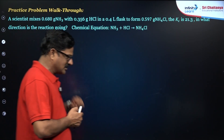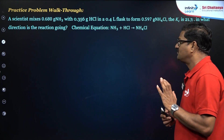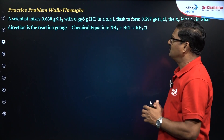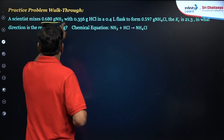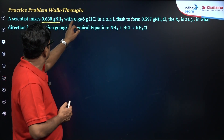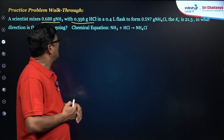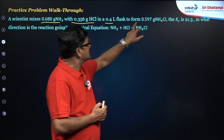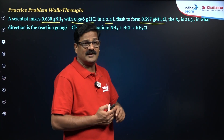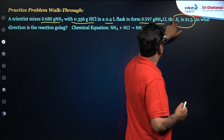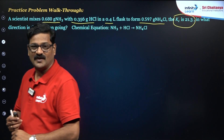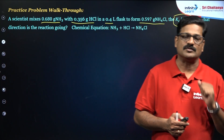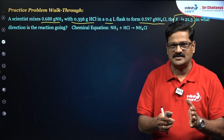Now let's apply this with a practice problem. A scientist mixes 0.680 grams of ammonia and 0.356 grams of HCl in a 0.4-liter flask to form 0.597 grams of ammonium chloride. The observed KC value is 21.3. You are asked: in which direction does the reaction proceed?